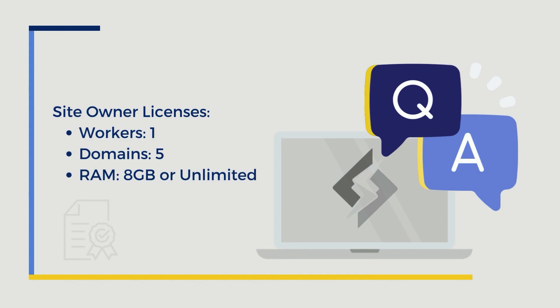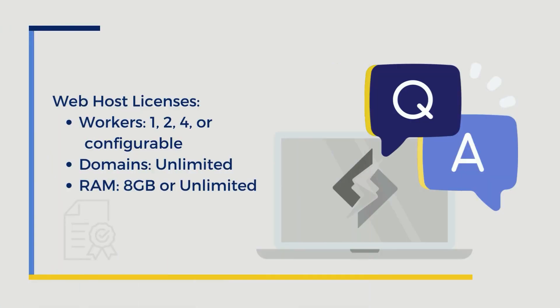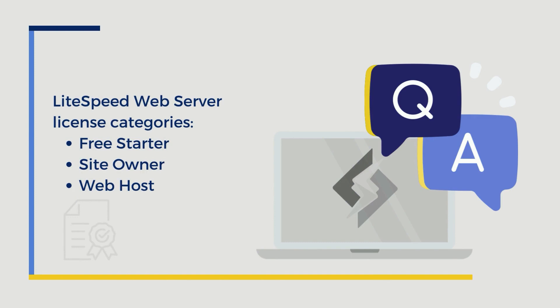The site owner licenses are meant for those who are hosting a small handful of sites. They too only come with one worker, but you can support up to five domains with the site owner license. There are two varieties of this license: one with an eight gigabytes of RAM limit and one that allows unlimited RAM. The next set are the web host licenses, meant for those providing hosting services, so there's no domain limit. With the exception of the web host Lite license which is limited to eight gigabytes of RAM, there's no RAM limit either. The web host licenses are distinguished by the number of workers assigned to each, ranging from one worker up to a configurable number of workers. These eight available licenses are configured to serve everyone from the low-end hobbyist with a single site to large hosting providers handling thousands of clients, so there's something for everybody.